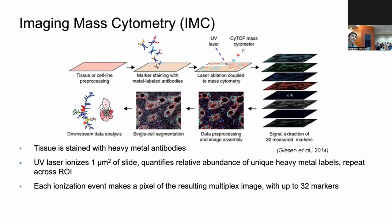In the study, we used imaging mass cytometry — a multiplex imaging modality with a variable resolution of one micron per pixel, but with the capacity to image upwards of 40 immunohistochemical markers in tandem. Tissue sections are stained with heavy metal conjugated antibodies, which are then ablated and imaged with a CyTOF mass cytometer. This allows for highly multiplexed imaging without the limitations conferred by spectral overlap. Fun fact: there is no light being used in these images.